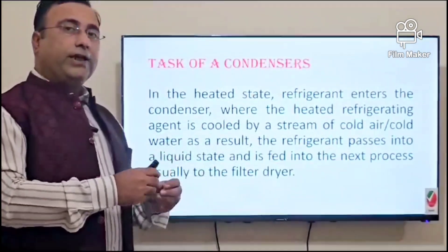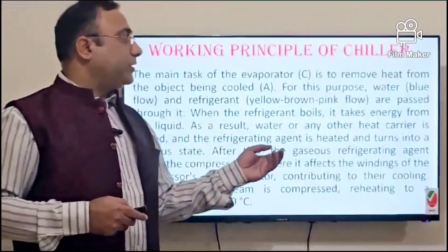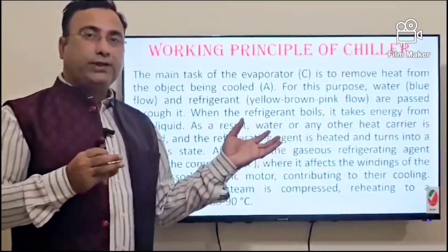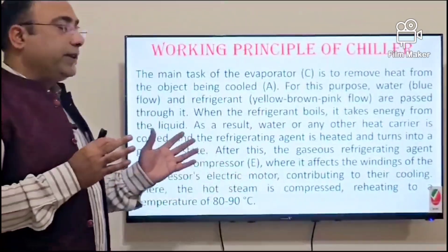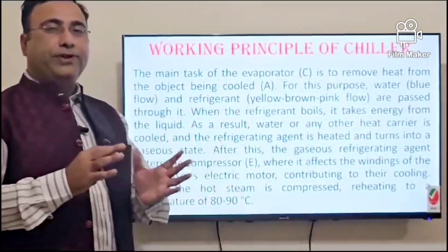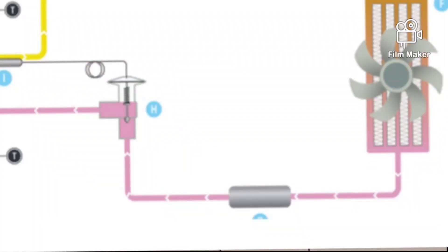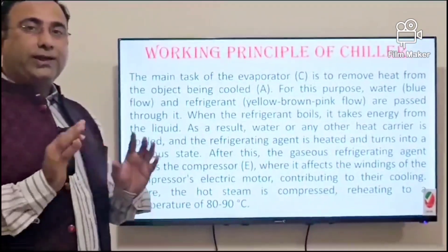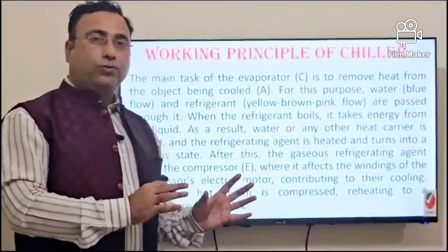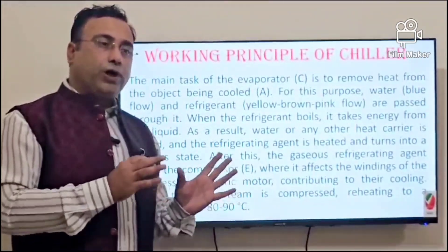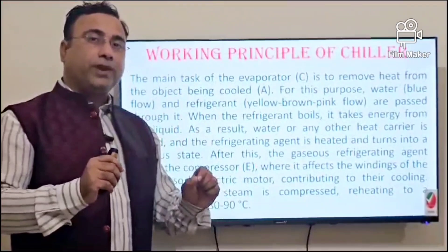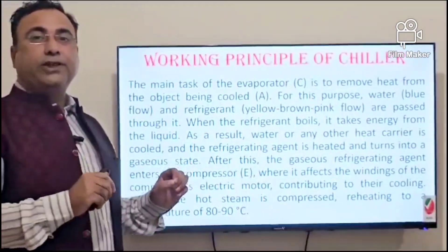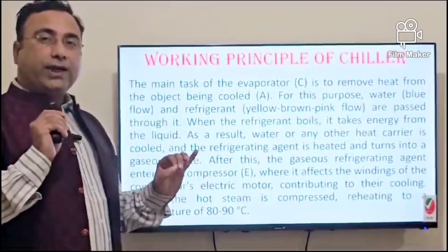After the condenser, the refrigerant passes into a liquid state and goes to the next process. If the capacity is more than 10 TR, the chiller company usually provides a dryer; below that, only a filter is used. The dryer removes humidity from the outer piping — it has no relation to the water or oil you want to cool. The system is 100% sealed internally with no chance of leakage.